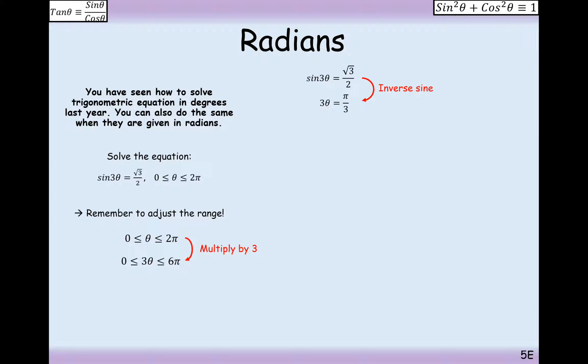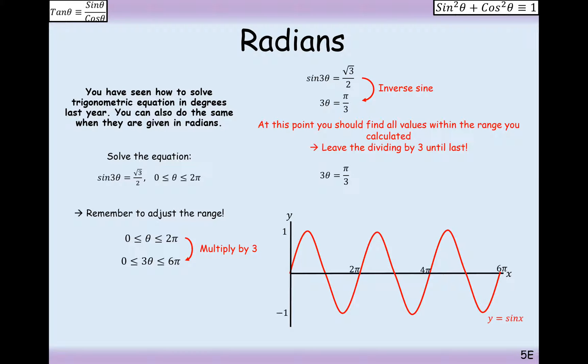And now we need to look for all the other solutions on the sine graph up to 6π. And this is what the sine graph looks like all the way up to 6π. So, I'm going to have my first solution at π/3. The next one is going to be at π - π/3, so that would be 2π/3. The next one is going to be from 2π up by π/3 radians, so that's 7π/3. The next one is going to be at 3π moving backwards by π/3,